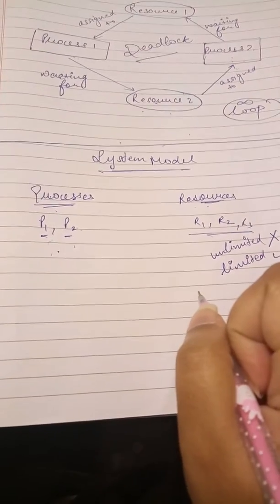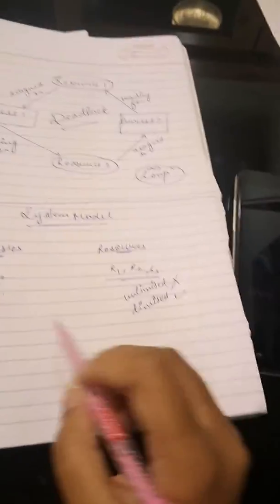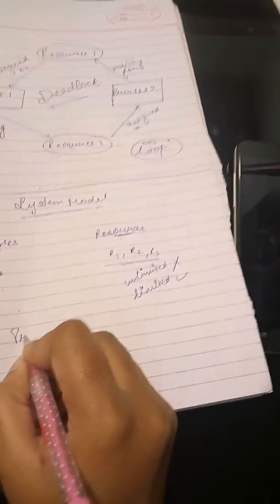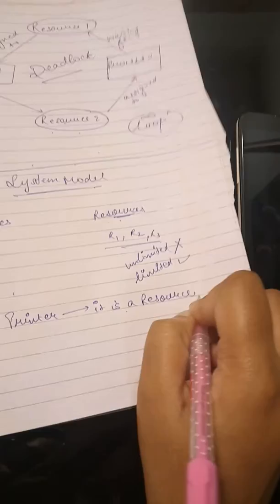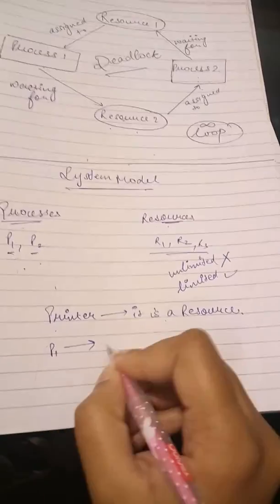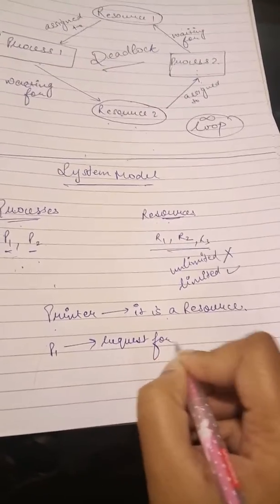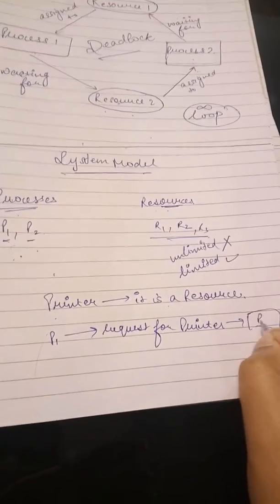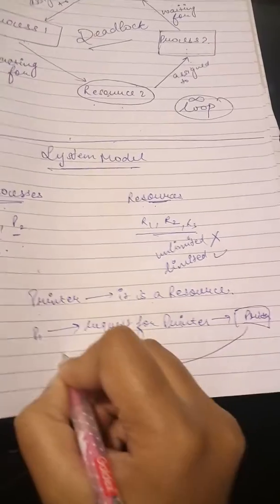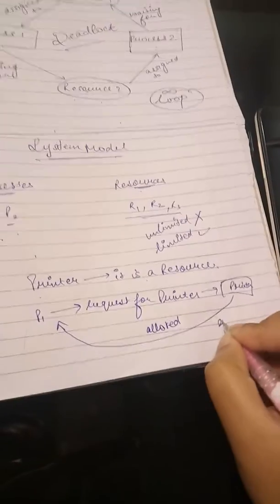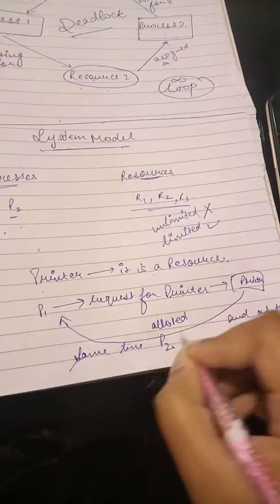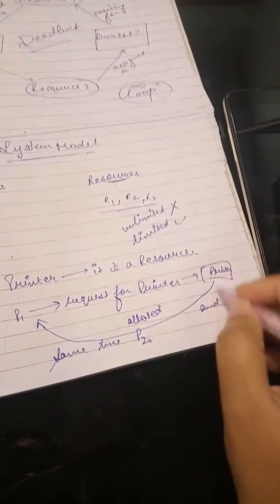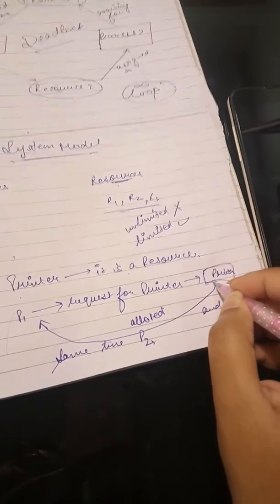Now the resources are partitioned into several types each consisting of some number of identical instances. So what this point means is suppose we have a printer, it is a resource. Now we have instances of printer which means that if process P1 requests for printer, it is allotted.